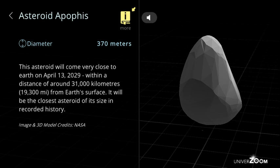Asteroid Apophis, diameter: 370 meters. This asteroid will come very close to Earth on April 13th, 2029 within a distance of around 31,000 kilometers, 19,300 miles from Earth's surface. It will be the closest asteroid of its size in recorded history.